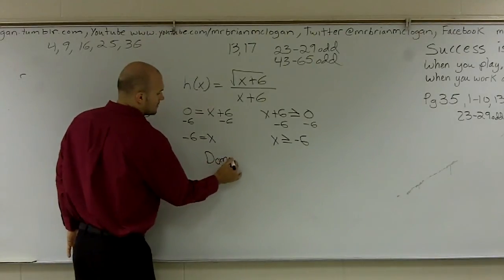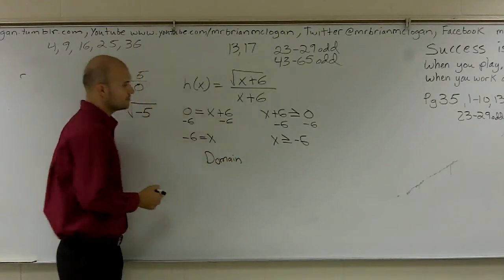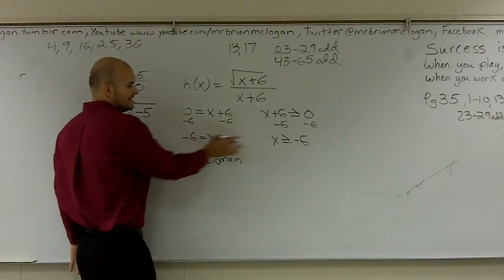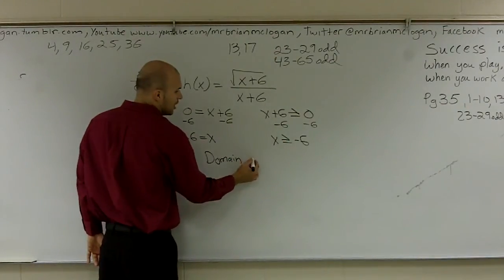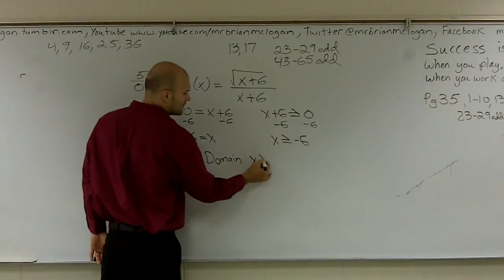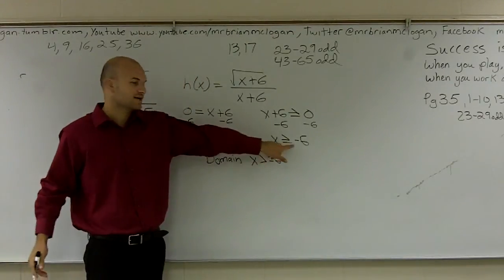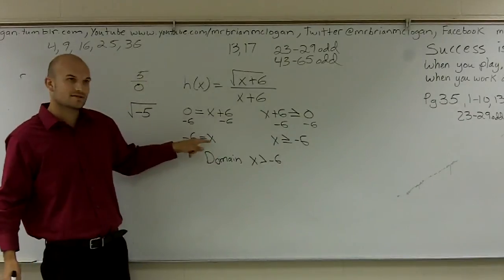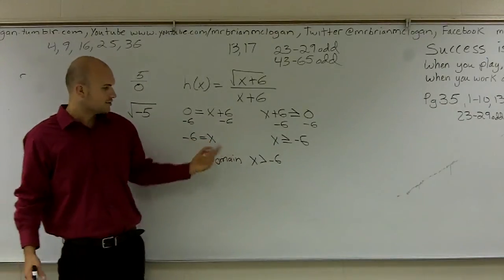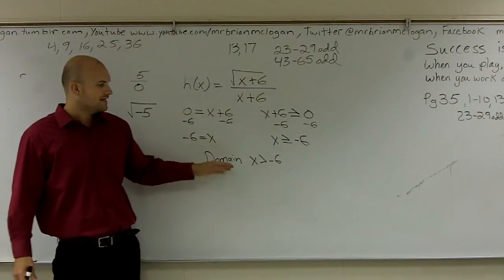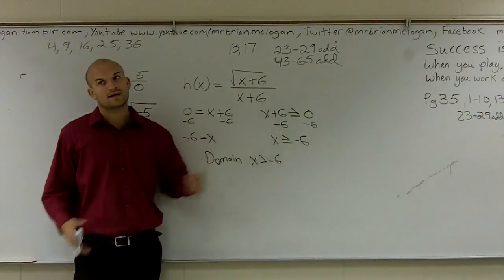So when I find my domain, the domain is - it can't equal this thing, so your domain is all values that are greater than negative six. Because you can't include the equals, we already said it can't equal. So the domain is all the x values that are greater than negative six.